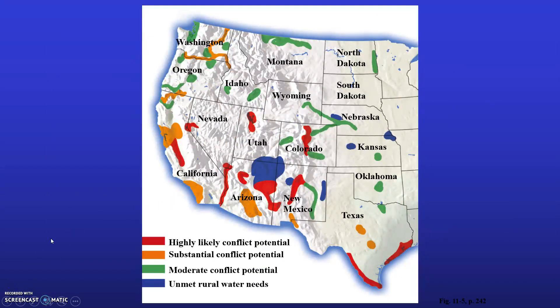This figure depicts water hot spots in 17 western states that by 2025 could face intense conflicts over scarce water needed for urban growth, irrigation, recreation, and wildlife. Some analysts suggest this is a map of locations where you shouldn't go live in the foreseeable future. Blue depicts unmet rural water needs, green indicates moderate conflict potential, orange indicates substantial conflict potential, and red indicates high conflict potential.